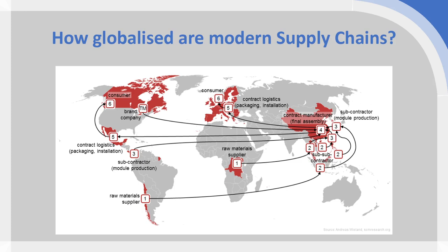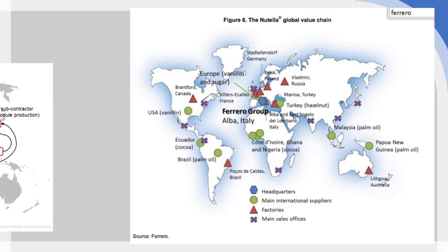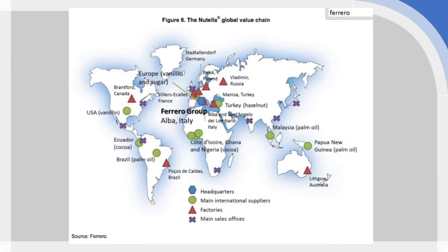It is worth saying that this is the case not just for complex products like electronics and other high-tech products, but pretty much any product today — even the simplest products usually have some kind of fairly complex and heavily globalized process involved. If we go from a smartphone all the way across to something nice and simple like Nutella — a chocolate spread — we see that even with this, there is a huge globalized supply chain.